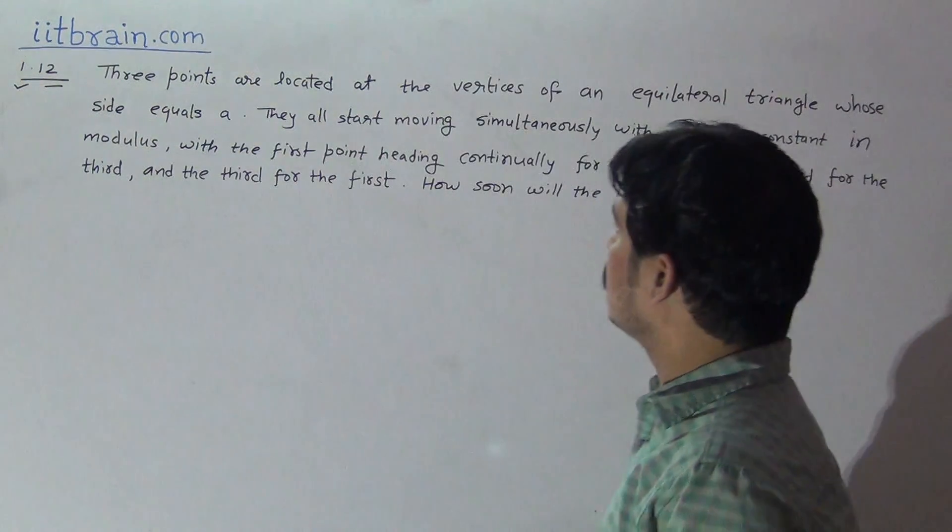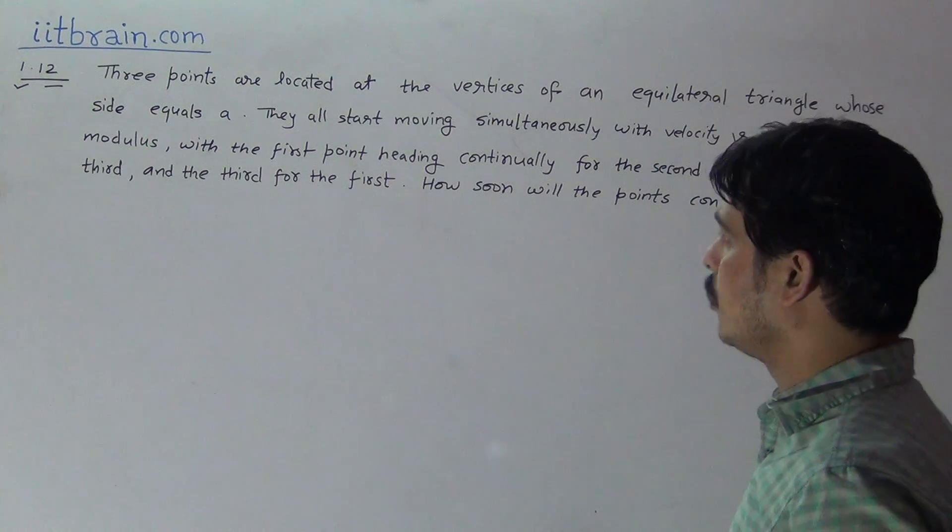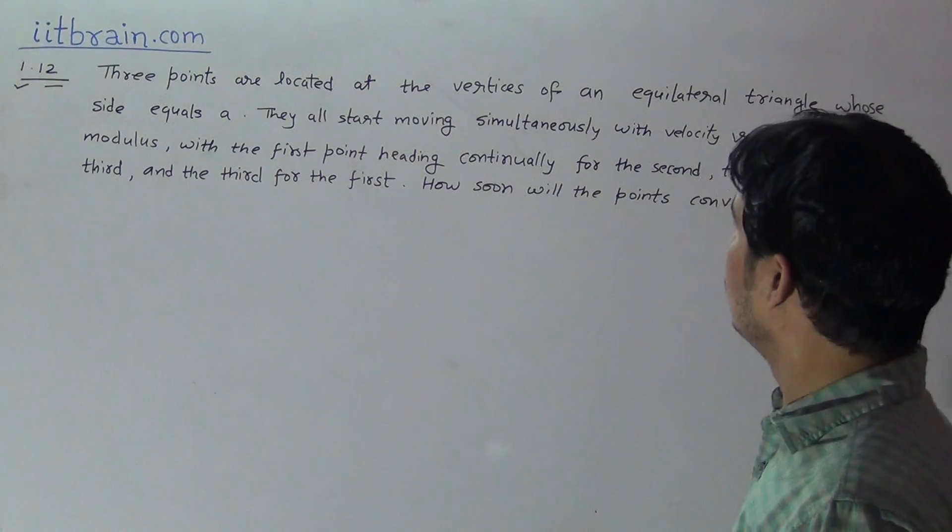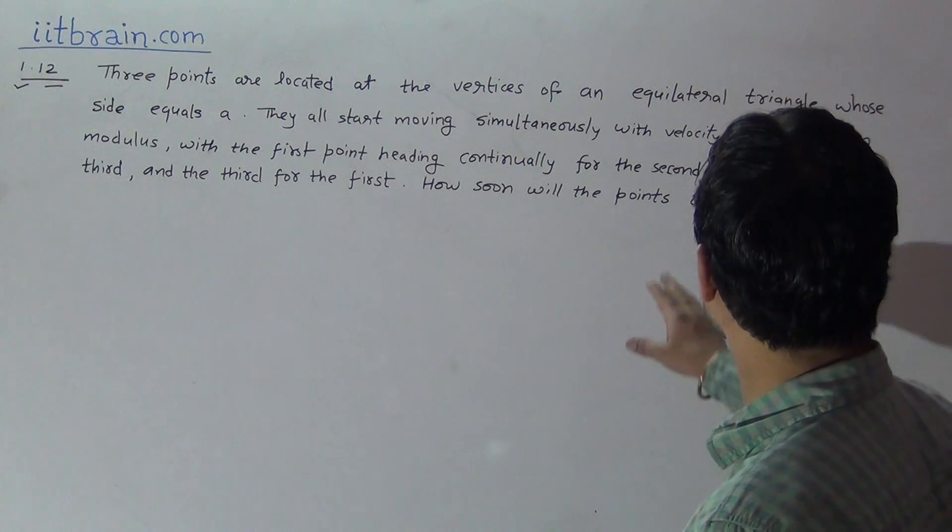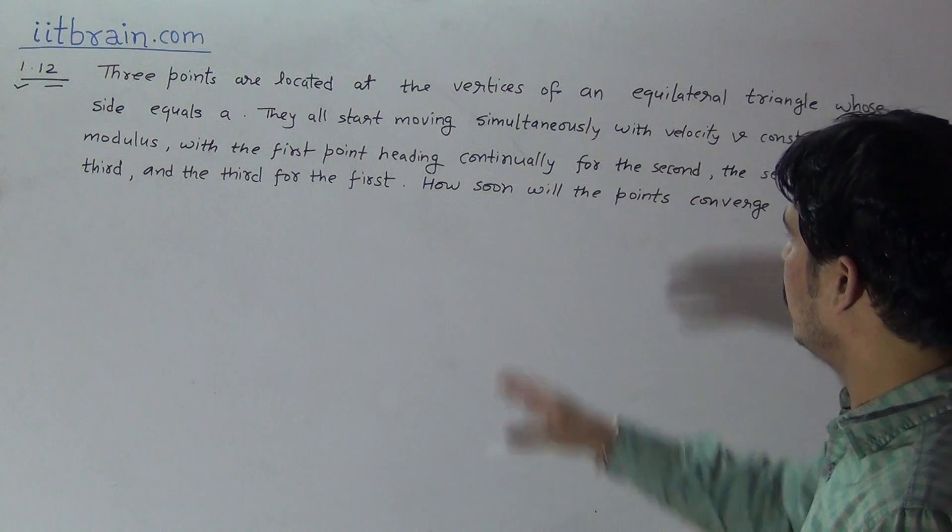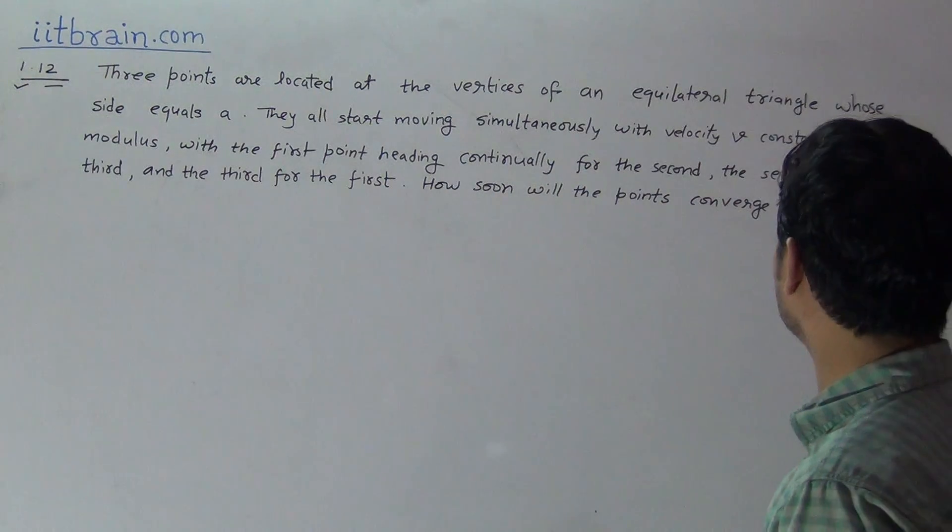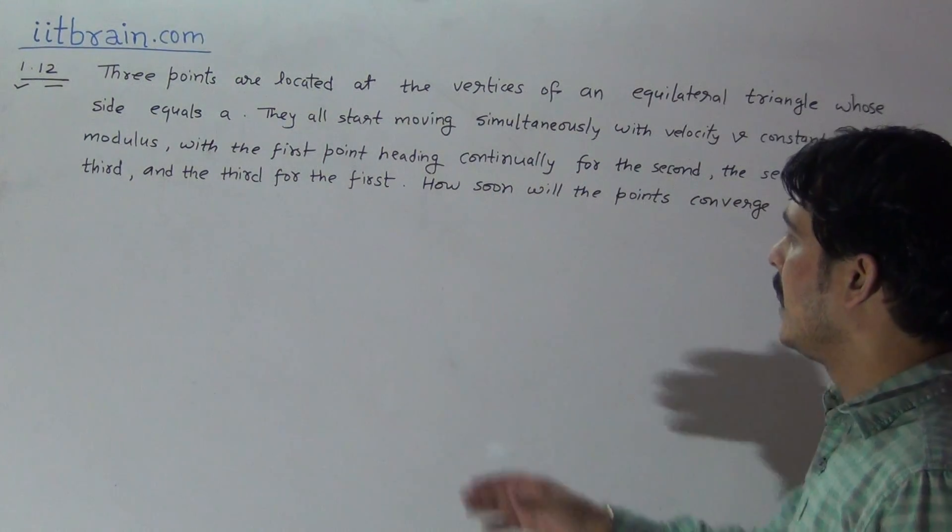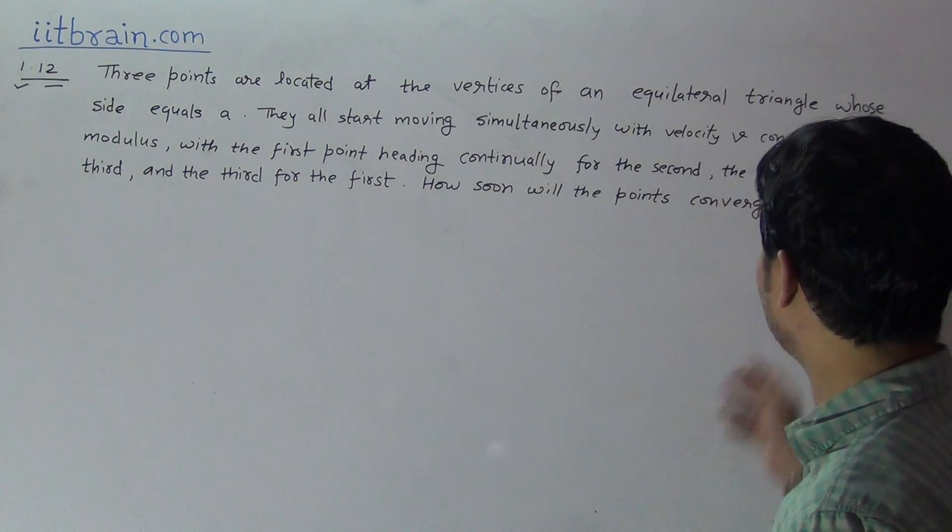The question is: three points are located at the vertices of an equilateral triangle whose side equals A. They all start moving simultaneously with velocity V constant in modulus, with the first point heading continually for the second, the second for the third, and the third for the first. How soon will the points converge?